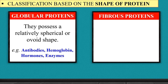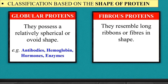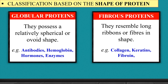Fibrous proteins generally have a long fiber shape — their shape resembles long fibers, which is why they are called fibrous proteins. They are mainly of animal origin and are insoluble in common solvents like water, acids, and alkalis. So globular proteins are soluble in common solvents, while fibrous proteins are insoluble. Examples of fibrous proteins include collagen, keratin, and fibroin.